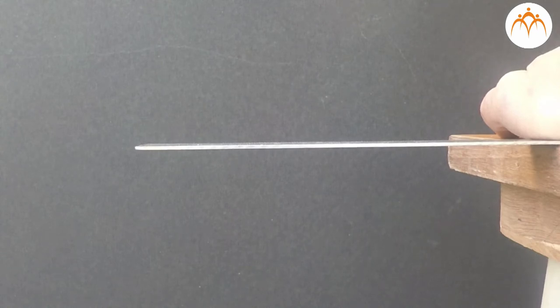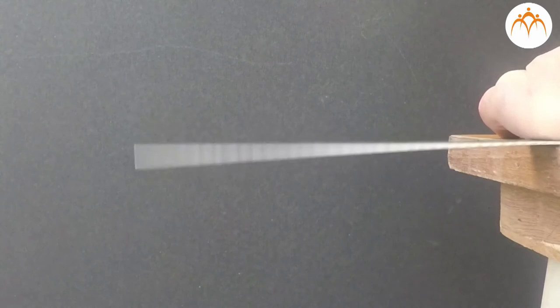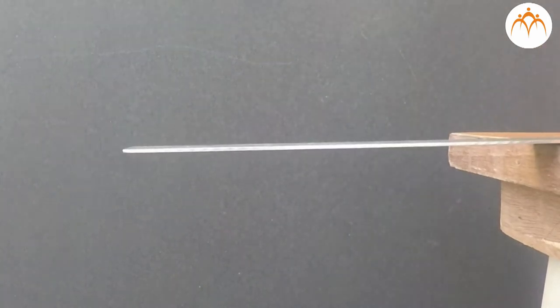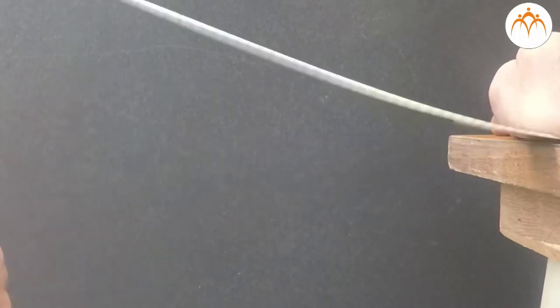Push it downwards and release it so that the ruler vibrates and makes sound. As we change the length of the ruler which can vibrate, the pitch changes.